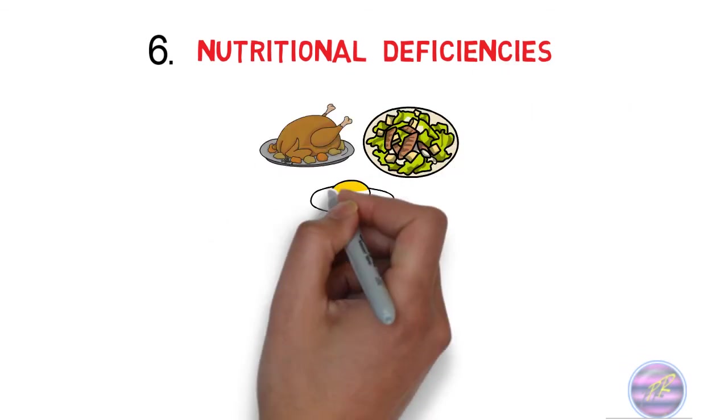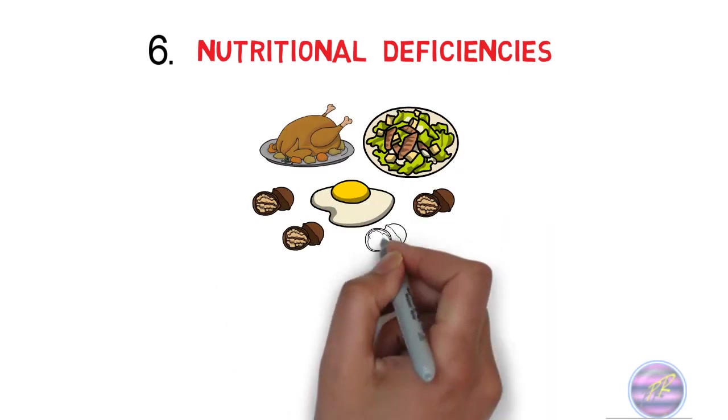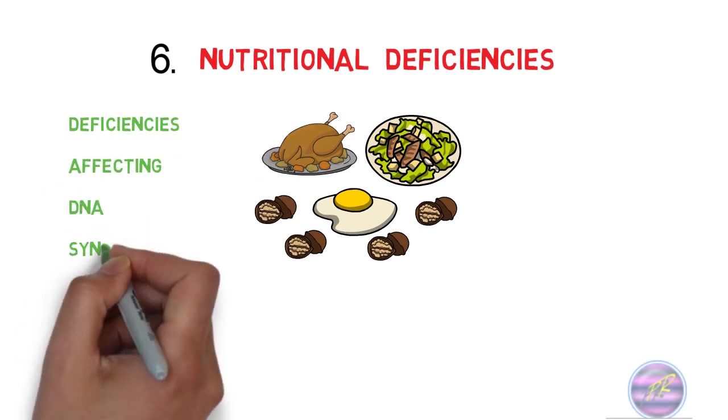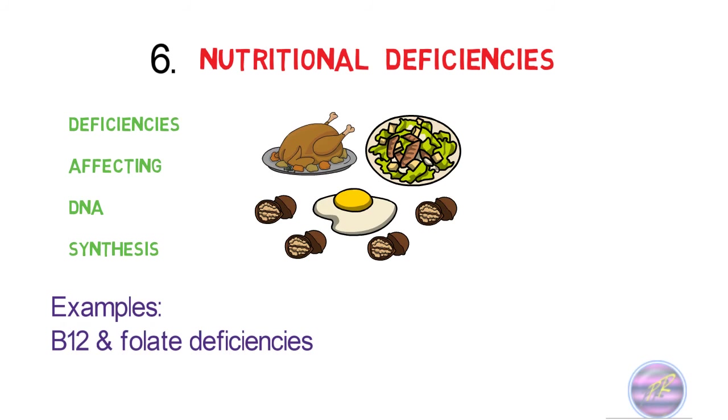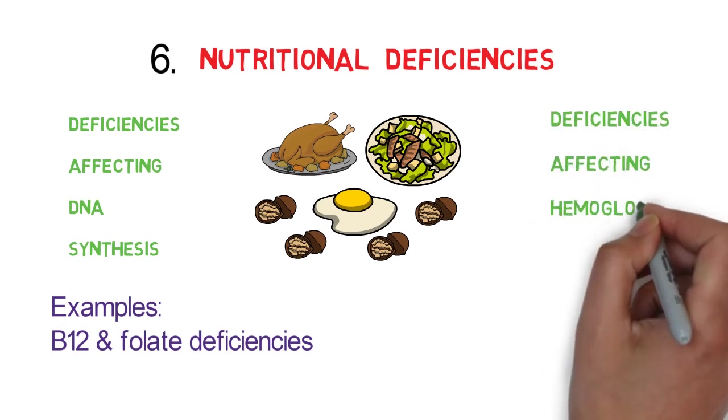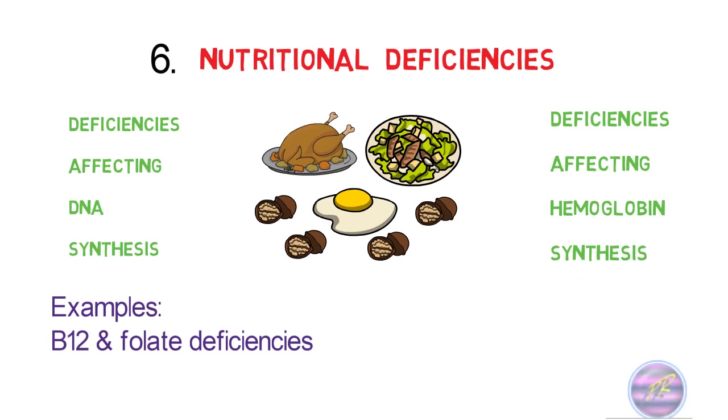The sixth cause is due to nutritional deficiencies. Under this, there can be deficiencies affecting DNA synthesis. For example, vitamin B12 and folate deficiencies. Or the deficiencies affecting hemoglobin synthesis. For example, iron deficiency anemia.